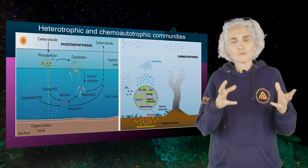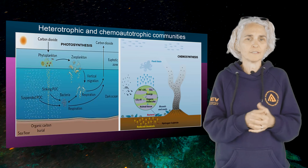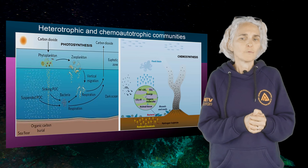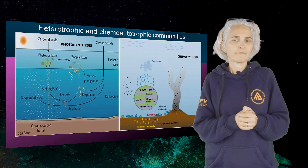There are two main trophic systems in the deep sea. We have heterotrophic ecosystems and we have autotrophic ecosystems. Heterotrophic ecosystems depend on the organic matter produced in the lit zone — the euphotic zone — where phytoplankton and bacteria use solar energy to produce organic matter.